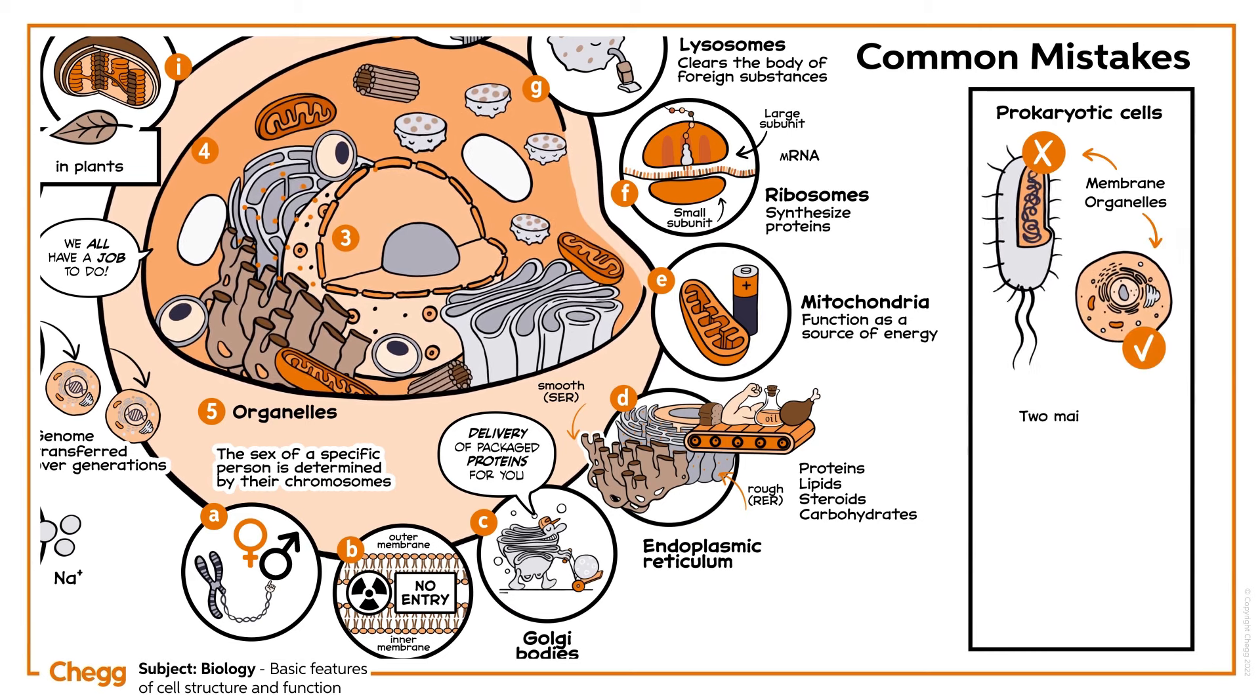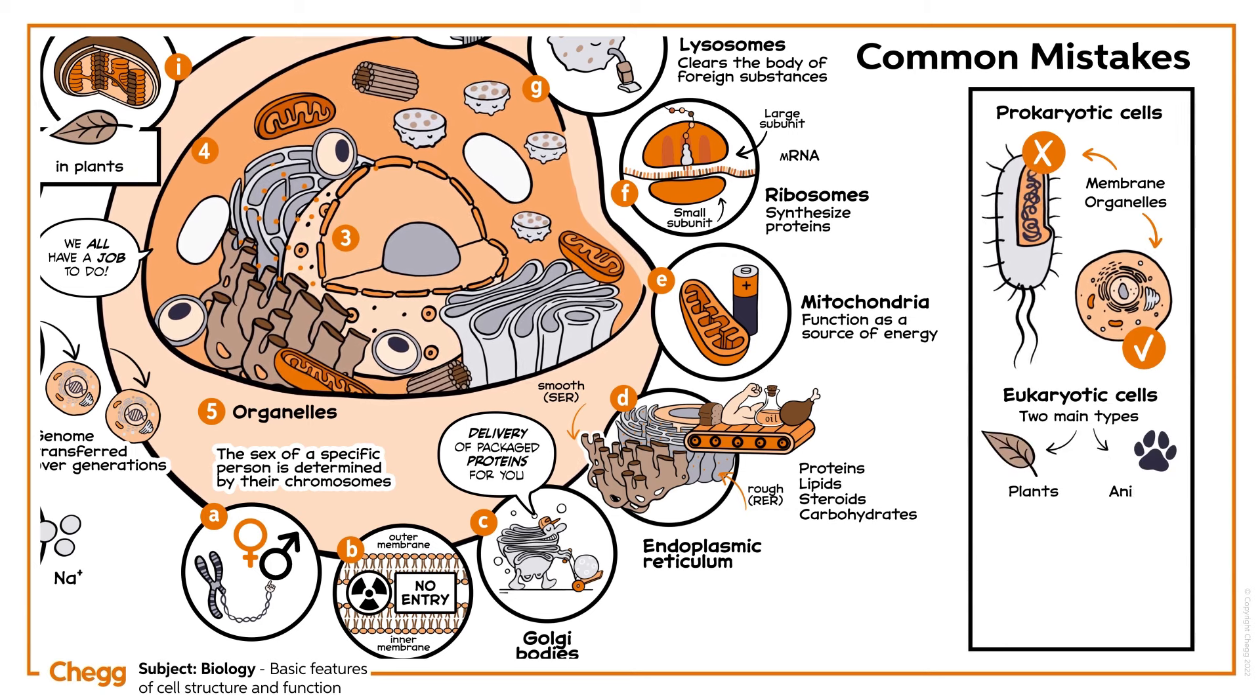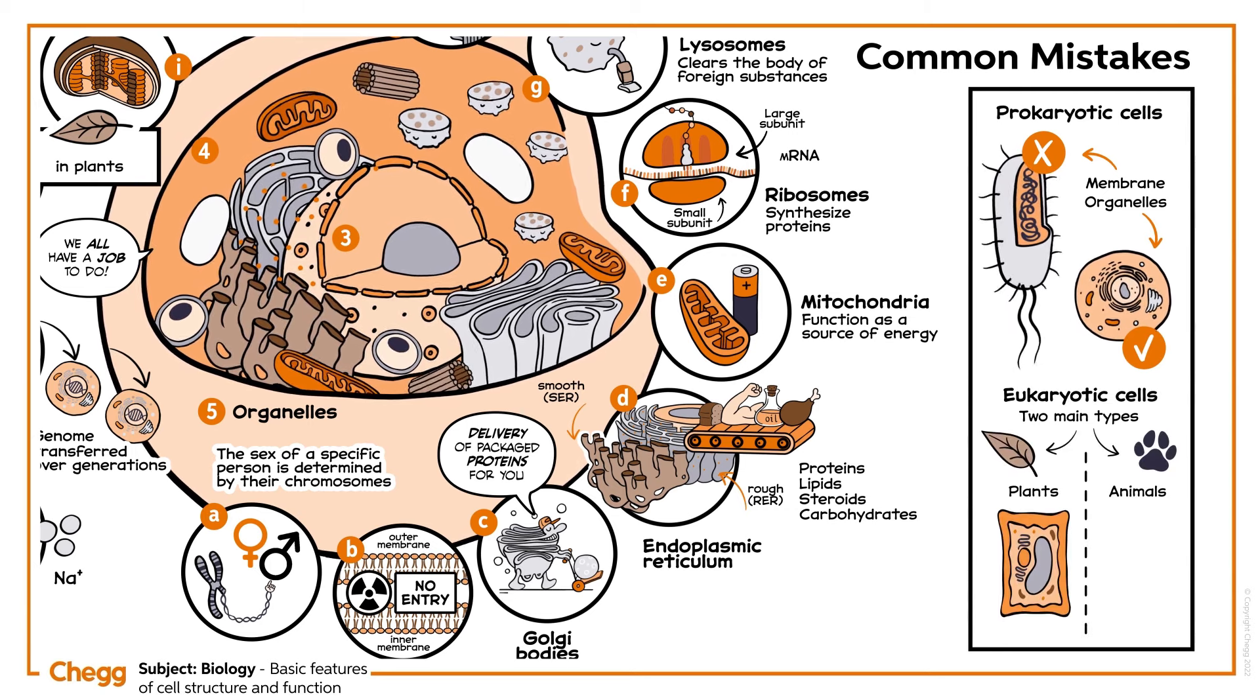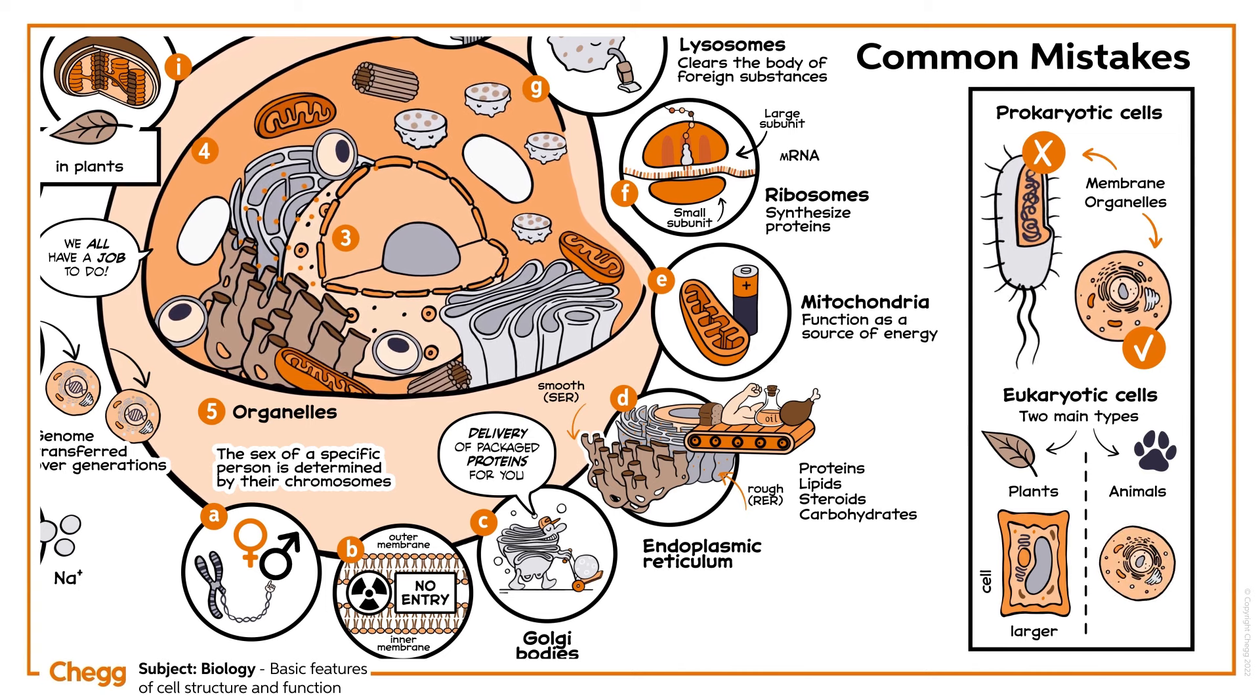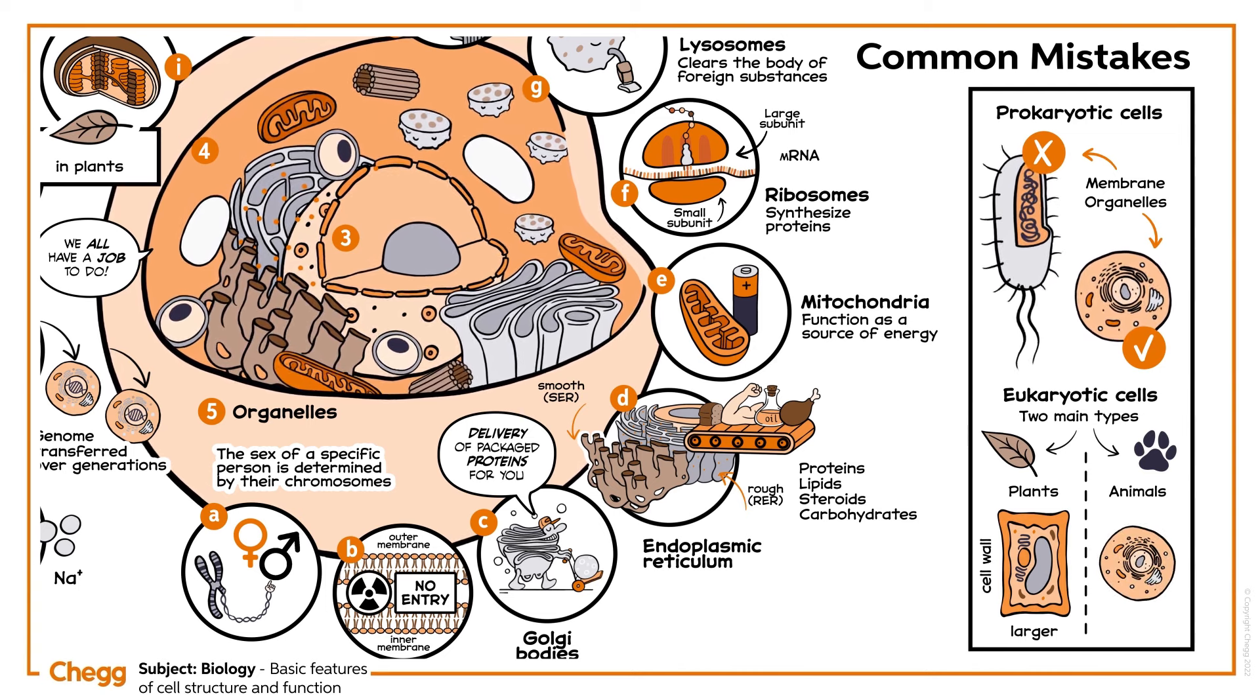The two main types of eukaryotic cells are plant and animal cells. Most plant cells are larger than animal cells and contain a solid and thick cell wall, which is not present in animal cells.